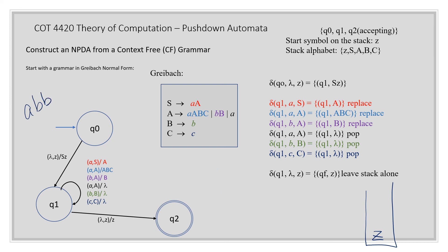Let's try ABC and see if that's accepting. We start with our start symbol and our letter is A. We have the letter A and S is on top, so we replace that with an A and consume the A. Our next letter is B. We have B with A on top, so we consume the B and replace that A with a B. Now we have letter C and there's a B on top of the stack. We do not have a transition defined for C with B on top of the stack, so this string is not in the language.